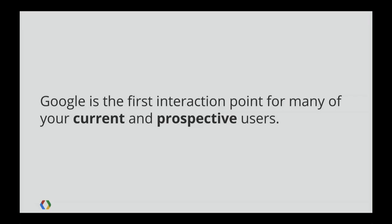Today we'll be mostly talking about a class of queries that I call brand queries — queries like Audi, NBC, Fandango. People coming to Google and searching directly for you. So the first question to address is, why should you care? People are already looking for you. Who cares what the Google results page looks like? Well, for many of your users, current and prospective, Google is the first interaction point for your brand. On the internet, it's not really your home page where you make the first impression — it's the Google search results page.